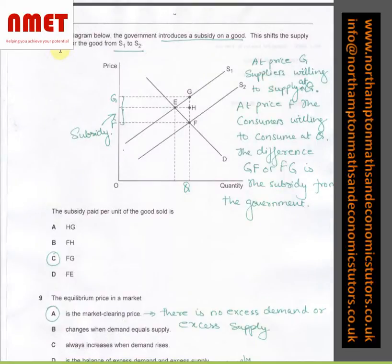In question number 8, in the diagram below, the government introduces a subsidy on a good. This shifts the supply curve for the good from S1 to S2. So it's shifting the supply outwards. What I've done over here is I've put down the explanation saying at price G, suppliers are willing to supply at Q. So at that G, that's what the suppliers are supplying. However, at that price, this is where, if you look at the move of my arrow, the demand will be.